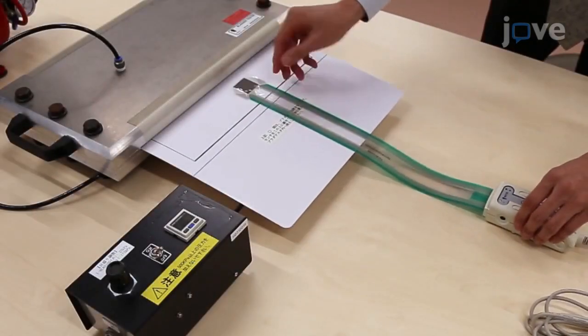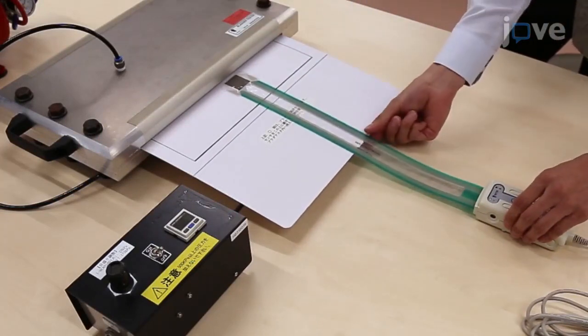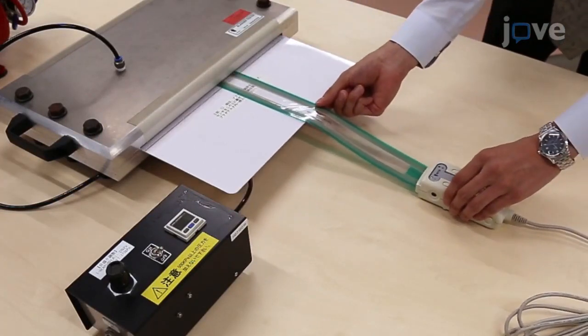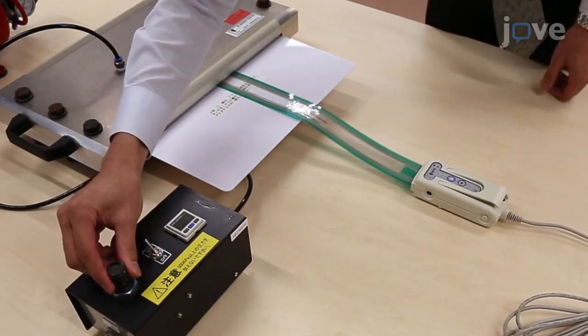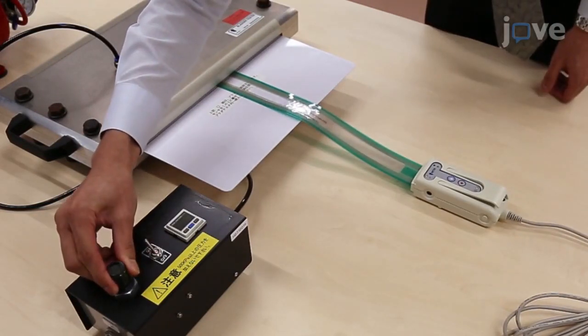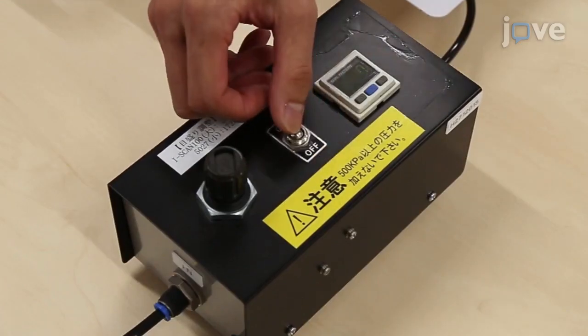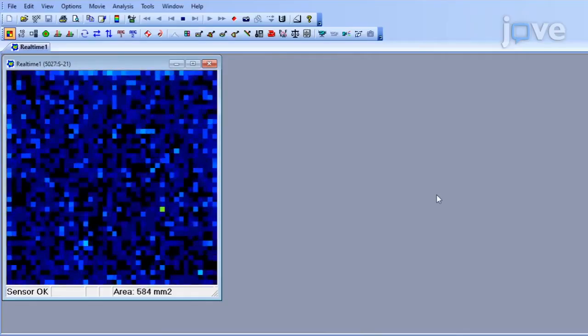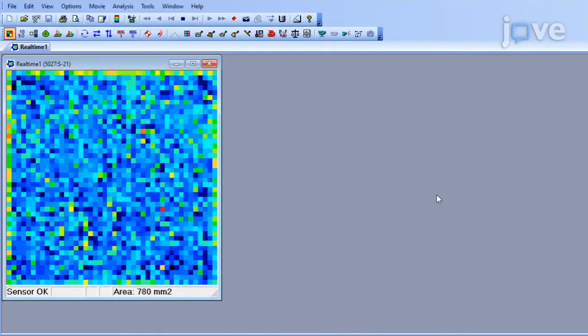To adjust the pressure, insert the sensing areas of the sensor sheet one by one into a compressor rig, and turn on the air valve of the compressor controller. Begin applying the pressure and adjust the regulator to the appropriate load value.